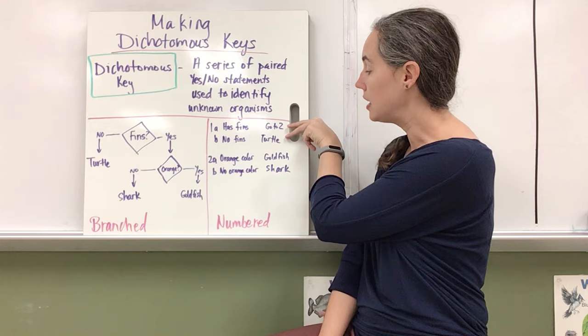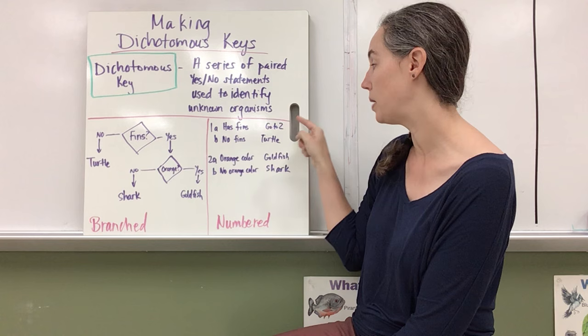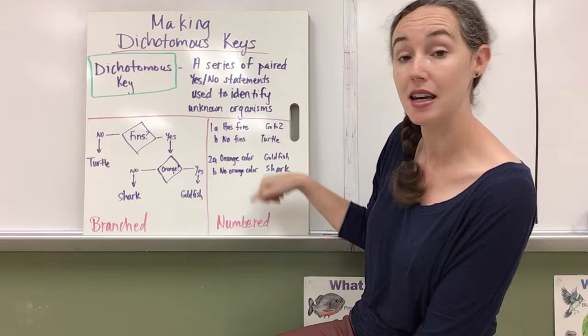In a numbered dichotomous key, you have pairs of statements. So for instance, you have an A and a B, and there's one that has fins and you may get an instruction to go to another statement, or no fins and it actually gives you an identification. So we're going to be looking today at how to make a numbered key.